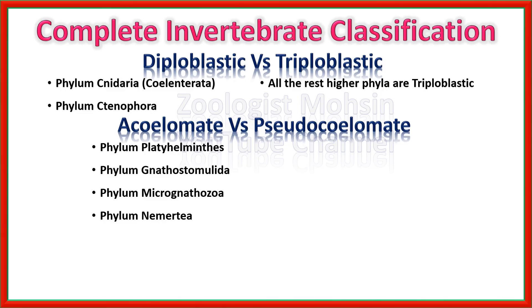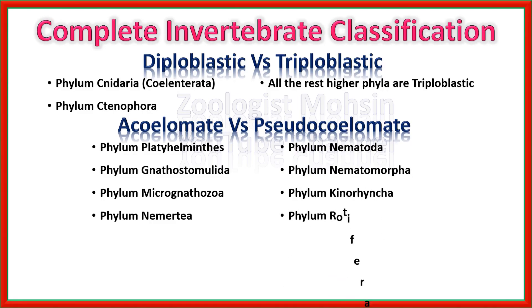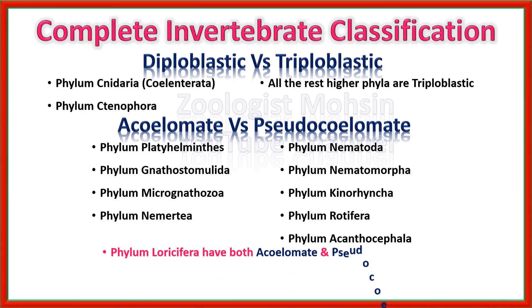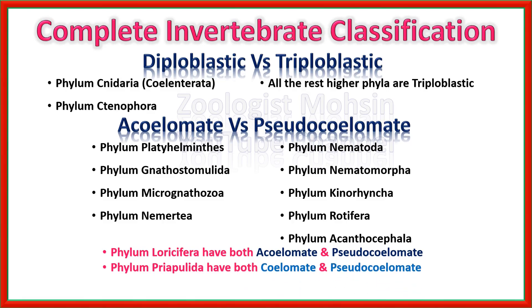The five phyla that have pseudocoelom are: Nematoda, Nematomorpha, Kinorhyncha, Rotifera, and Acanthocephala. All organisms in these five phyla have pseudocoelom. There are exceptions: phylum Loricifera has both acoelomate and pseudocoelomate organisms; phylum Priapulida also has both coelomate and pseudocoelomate members. Questions are always asked from exceptions, so remember these.